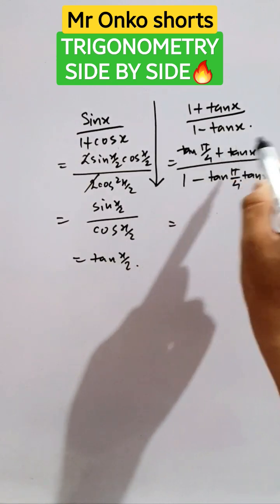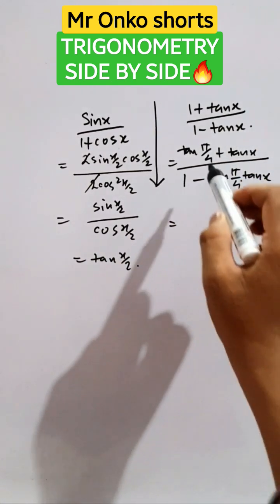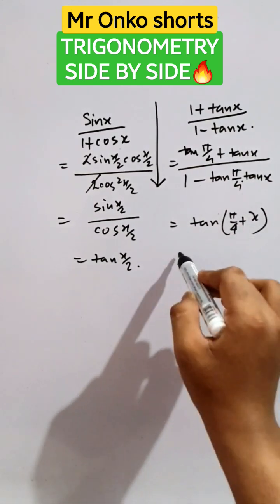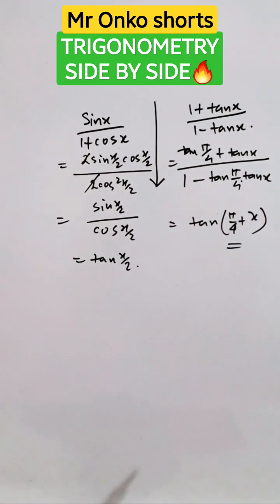Now we know that tan c plus tan d by 1 minus tan c tan d is of the form tan of c plus d. So this is the answer of the given questions.